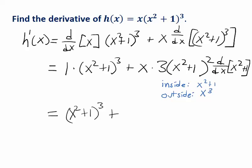Let's put the three in the front maybe, because that's a little bit more natural to have a constant coefficient in the front. And what's the derivative of the x squared plus one? Well that's 2x.